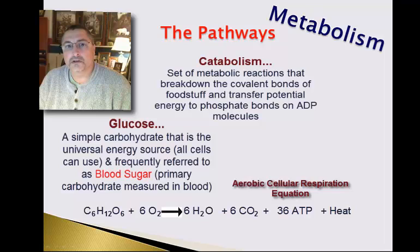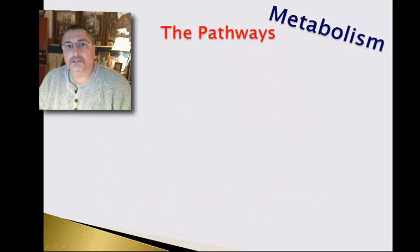In aerobic cell respiration, glucose in the presence of oxygen is broken down to water, carbon dioxide, usable energy in the form of ATP, and heat, which is unusable energy. This reaction is about 38% efficient, which means that the vast majority of the potential energy is released as heat.